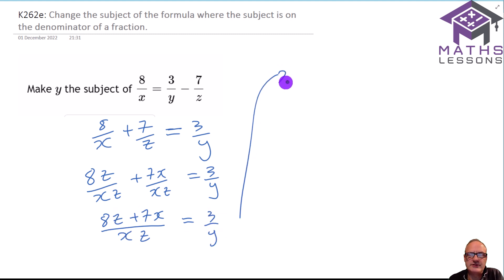I'm going to do that up here to keep it all on one screen. So reciprocate this side, I get xz over 8z plus 7x. And on this side, if I do the same, remember we've got to do the same to both sides, I get y over 3.